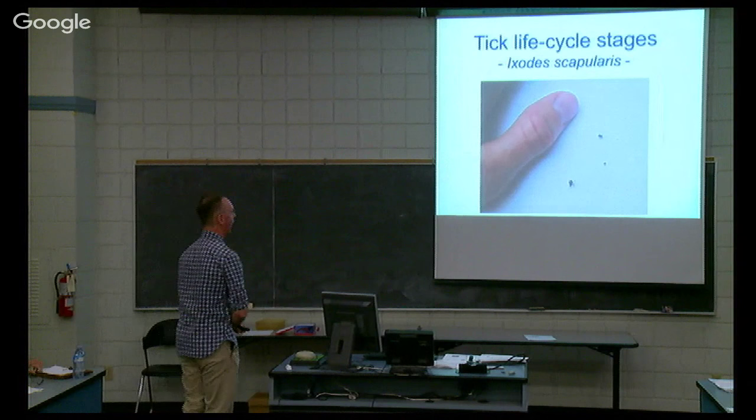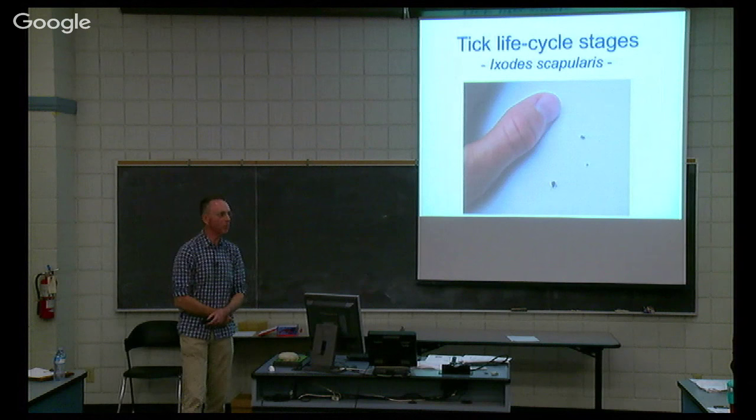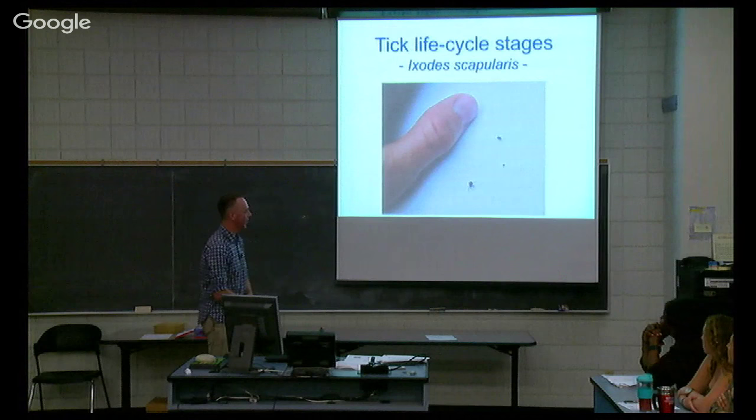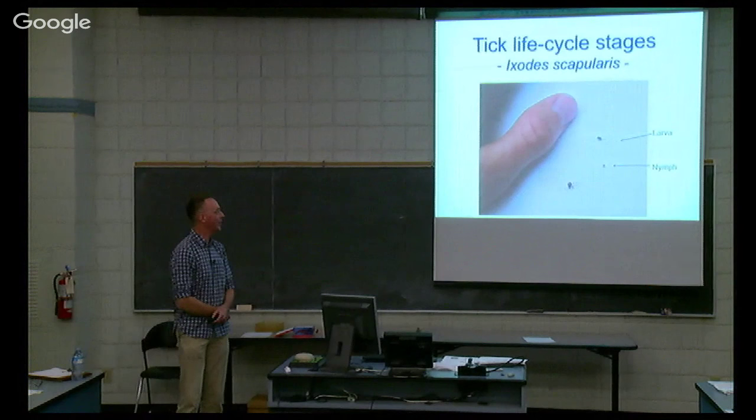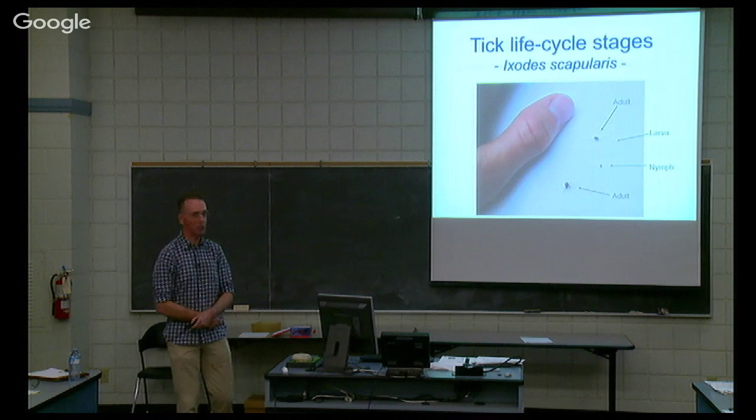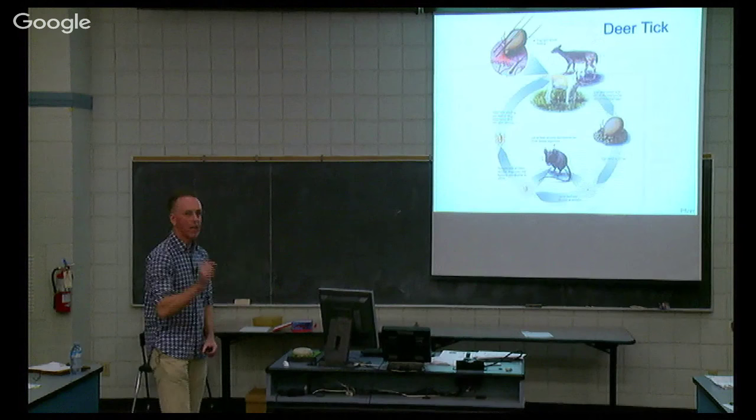How big are the different life cycle stages? That's a larva — do you think you would see it if it was on you? That's a nymph, and those are two adults, not engorged. You can appreciate it's very easy to miss them, especially on our pets. What does this tick need to sustain itself and become fully established? It's called the deer tick because the adults preferentially feed on deer, especially white-tailed deer. It's essentially a wildlife parasite.